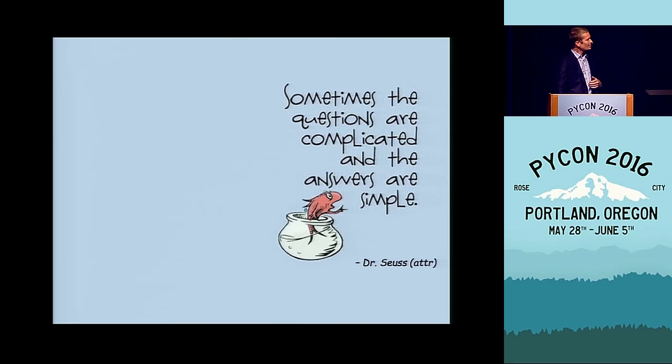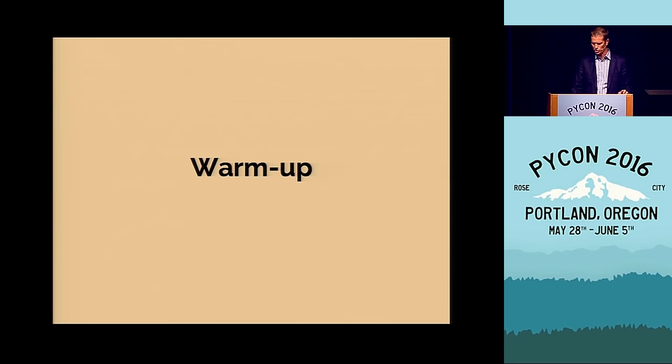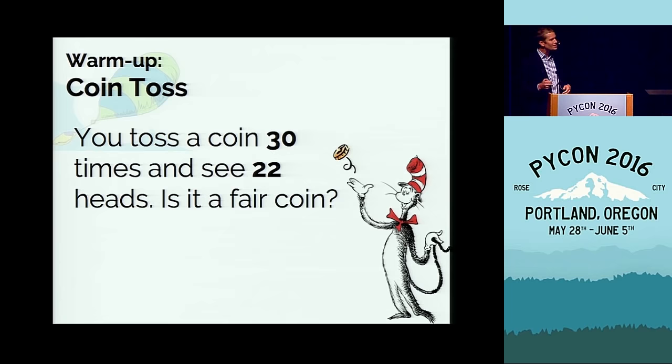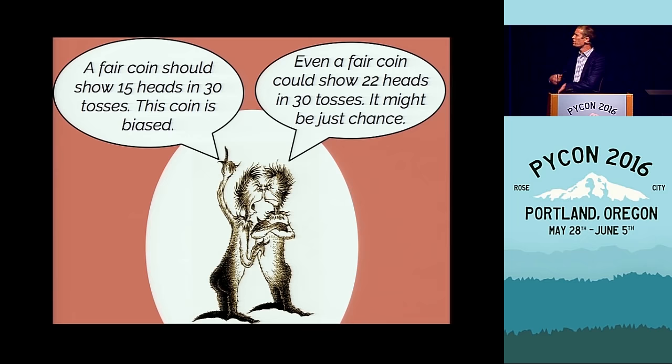As with any statistics talk, we always like to start with a warm-up involving flipping a coin. Let's say you toss a coin 30 times and you see that it lands heads 22 times. The question you want to answer is: is this a fair coin? A fair coin should show about 15 heads, so this coin is probably not fair. But your friend says even a fair coin could show 22 heads every once in a while. So how do you answer this question?